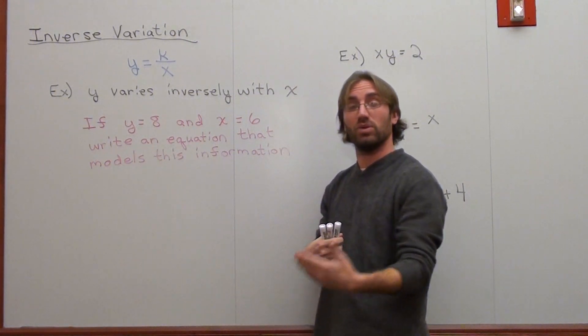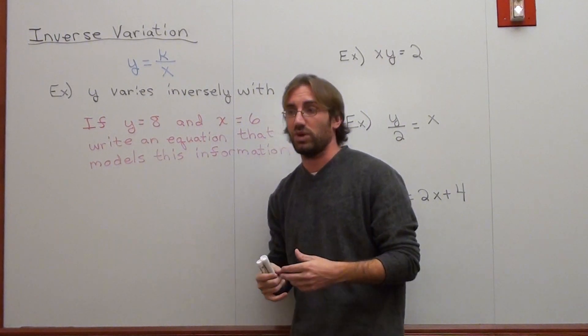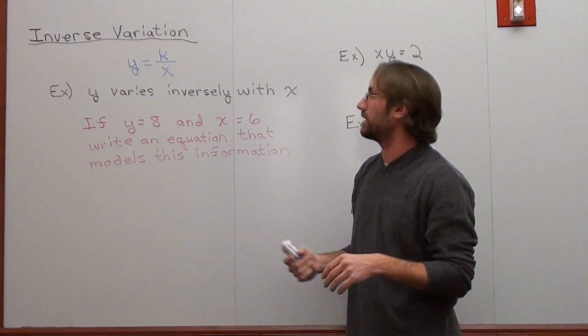where y stands for a variable y, x stands for the variable x, and k stands for the constant of variation, which is just a number. That's all it really is.